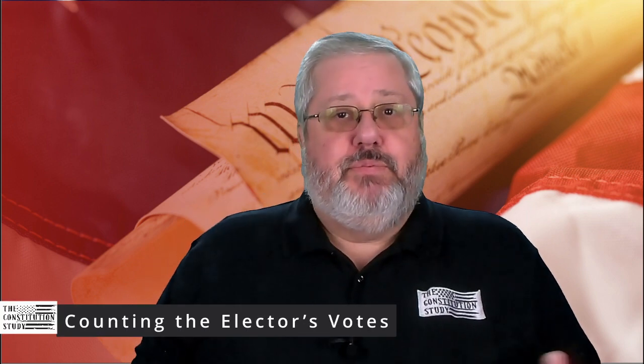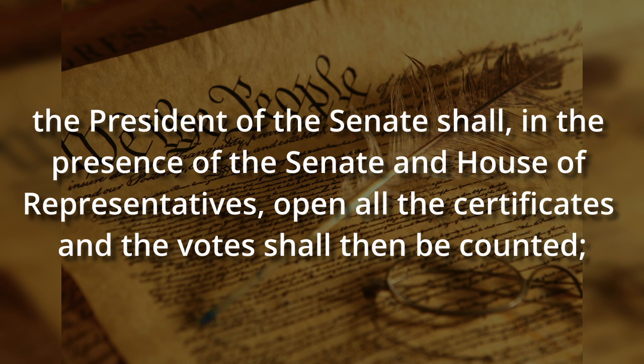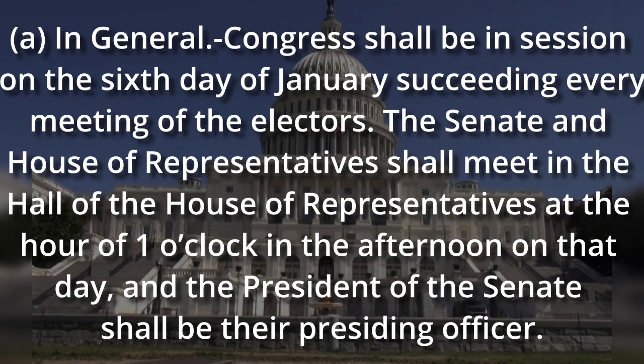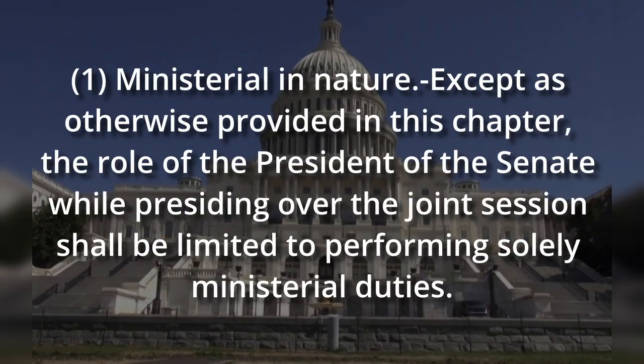Next comes the counting of the votes of the presidential electors. This has been codified into law by Section 15 of Title III of the United States Code. According to the 12th Amendment, the process starts with the president of the Senate opening the certificates to be counted. The president of the Senate shall, in the presence of the Senate and House of Representatives, open all the certificates and the votes shall then be counted. This counting happens on January 6th — Congress shall be in session on the 6th day of January succeeding every meeting of the electors. The Senate and House of Representatives shall meet in the hall of the House at 1 o'clock in the afternoon, and the president of the Senate shall be the presiding officer. According to the 12th Amendment, the only role of the president of the Senate during this session is to open the certificates and have them counted. Congress confirmed this in subsection B of Section 15: the role of the president of the Senate while presiding over the joint session shall be limited to performing solely ministerial duties.